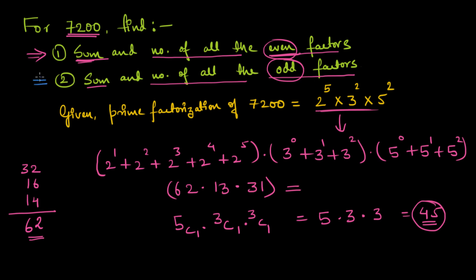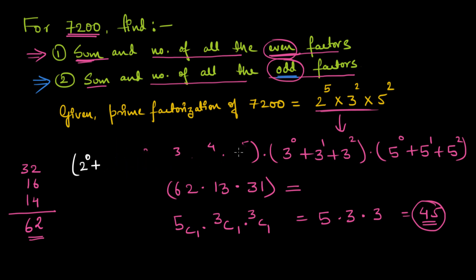Now for the sum and total number of odd factors. A factor is odd if it is not divisible by 2. Originally, the full bracket (2⁰ + 2¹ + ... + 2⁵) multiplied by the other brackets gives all factors. To find odd factors, I need to remove all terms that contain a power of 2 — those are the terms that make factors even. So I remove all terms except 2⁰.